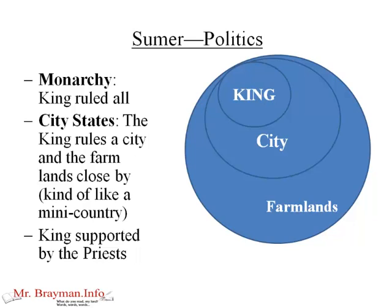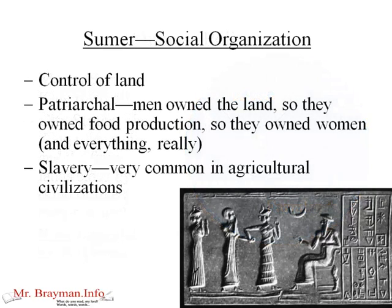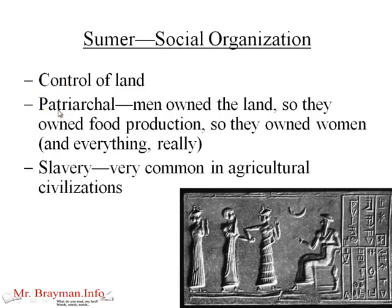Politically, Sumer was pretty simple — they were a monarchy. The king ruled everything; he wrote the laws, he could change the laws. They were organized into city-states, where the king rules a city and the farmlands close by — kind of like a baby country. While the king ruled everything, he did have to have the support of the priests. The social organization was very much based on control of land: if you control land, you control food, you control people. It was also very patriarchal — the men owned the land, so they owned food production, and then they owned the women. They also practiced slavery, which is very common in agricultural civilizations, since planting and harvesting is very difficult work.